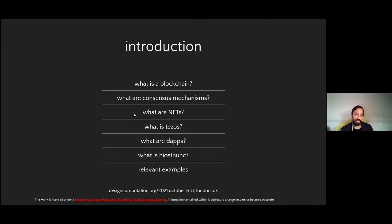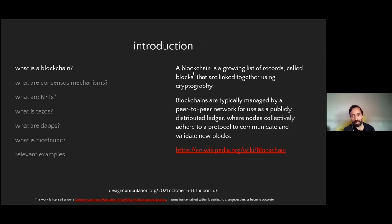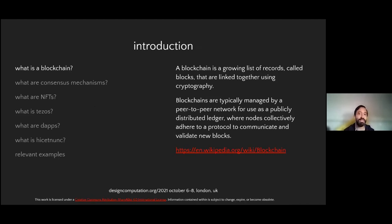So to introduce things, we're going to start from scratch here. What is a blockchain? What are NFTs? What is Tezos? What are DApps? What is HicetNunc? And maybe start with some relevant examples. So what is a blockchain? Probably a term you've heard a lot of before. To put it as simply as possible, it's just a growing list of records. You might have an array of entries, an array of objects, and that just keeps growing. In the case of a blockchain, this list is immutable — it keeps growing and growing. These records are blocks, linked together using cryptography.